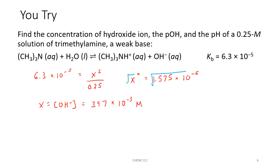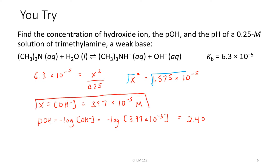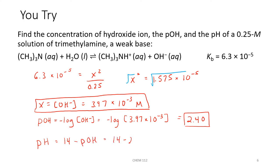From here, we calculate pOH by taking the negative log of the hydroxide ion concentration. Taking the negative log of 3.97 × 10⁻³ gives us a pOH of about 2.40. So we have our hydroxide ion concentration and our pOH. Lastly, our pH is calculated by taking 14 minus pOH: 14 − 2.40 = 11.60. The pH is greater than 7 because we had a weak base, so we had a basic solution.